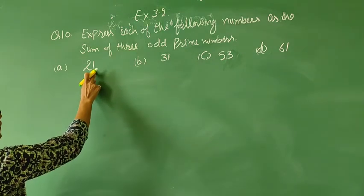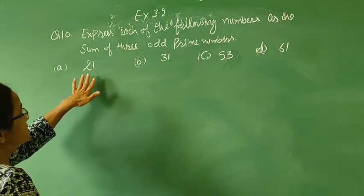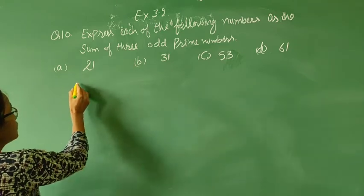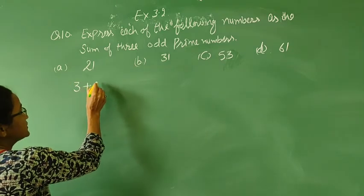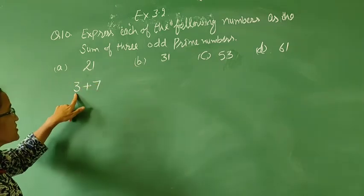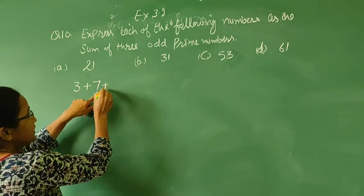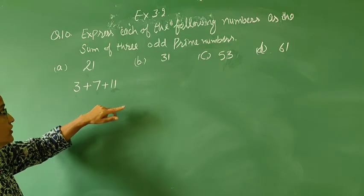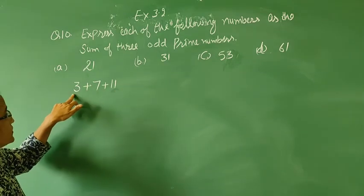In 21, now we add odd prime numbers whose sum is 21. So, 3 plus 7, 7 plus 3 is 10, 10 plus 11 is 21. So, the sum of 3, 7, and 11 is 21.